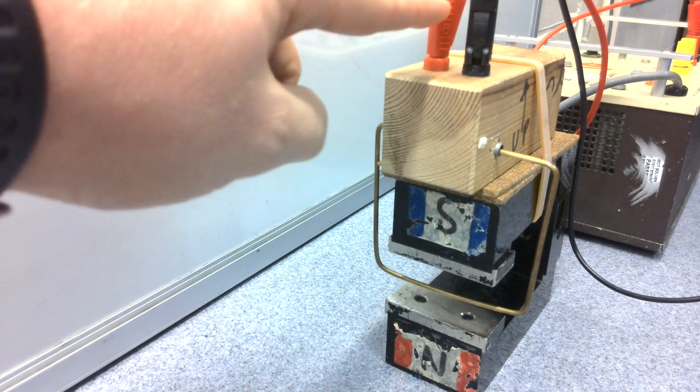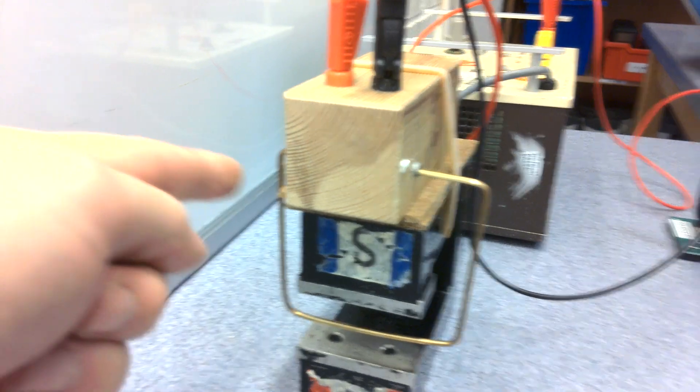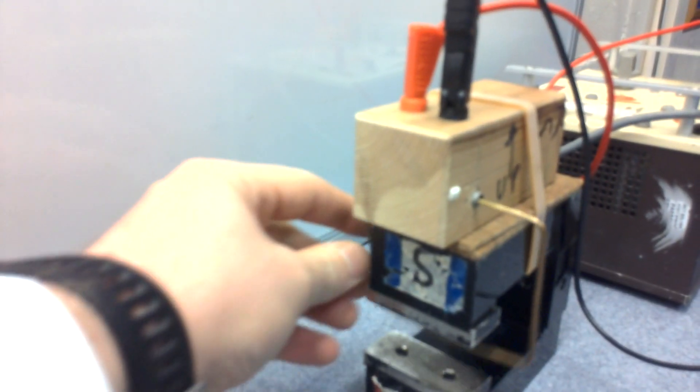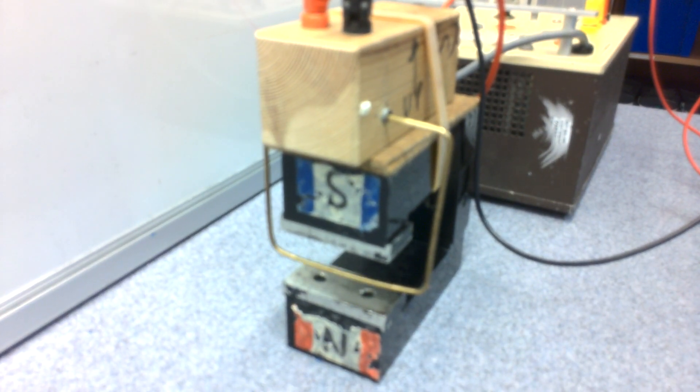So that positive terminal is connected to this side. The negative side is connected here, and this is free to spin. You've also got north and south poles of the magnet.